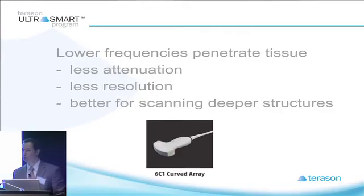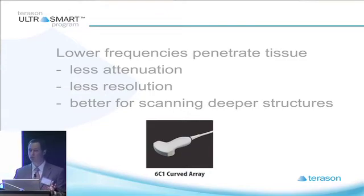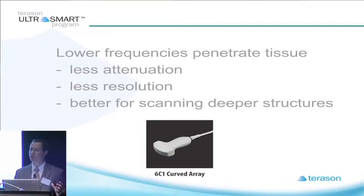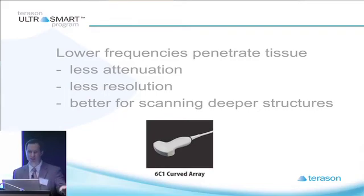That's when you want to use a curved array, also called curvilinear arrays. They're lower frequencies — 6 megahertz down to 1 megahertz — still above the 20k that defines ultrasound. You get less attenuation, but you have to compromise something: in this case you'll compromise some resolution, but you will get to penetrate deeper tissues and get better imaging of deep structures than you would otherwise.